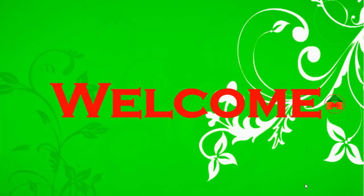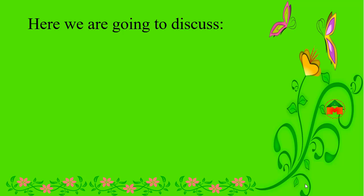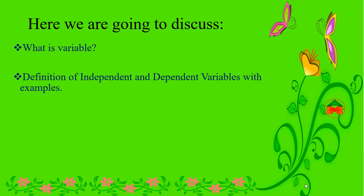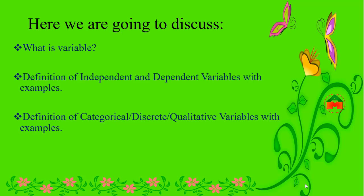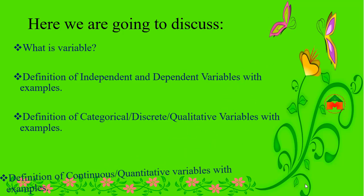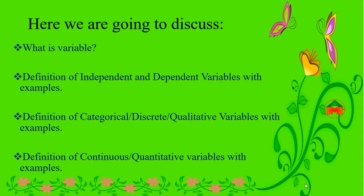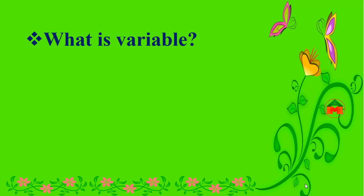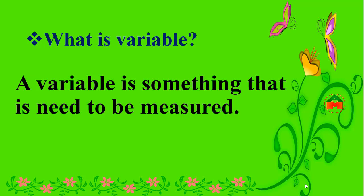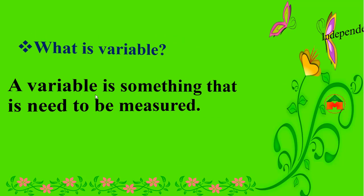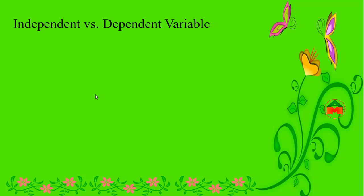Welcome to the knowledge of variables. Here we are going to discuss the definition of independent and dependent variables with examples, the definition of categorical, discrete, or qualitative variables with examples, and the definition of continuous or quantitative variables with examples. A variable is something that needs to be measured, so anything that needs to be measured is called a variable.